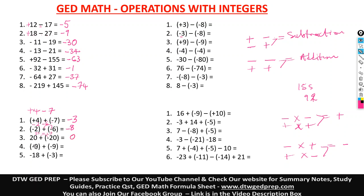Here we have negative 9 with nothing in front of it, so it stays negative 9. Plus, in parentheses, negative 9: positive times negative gives negative — so we have negative 9 and negative 9. Same signs, we add: that gives 18, and it's negative 18.